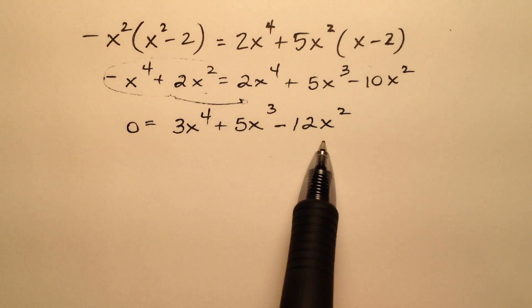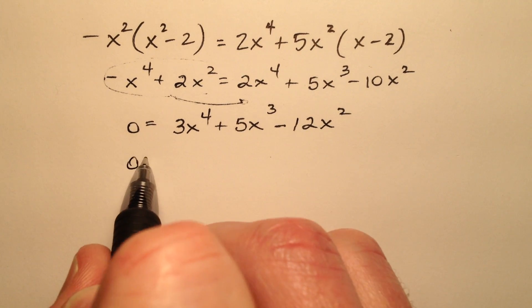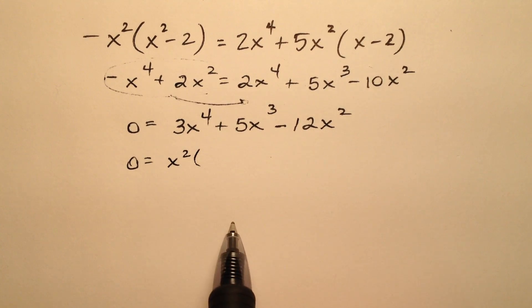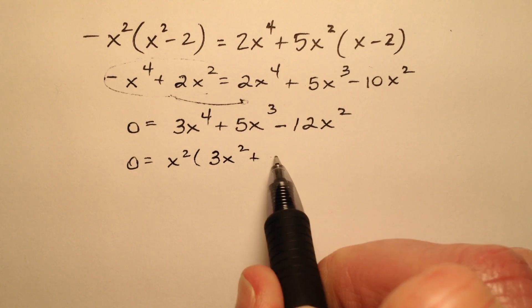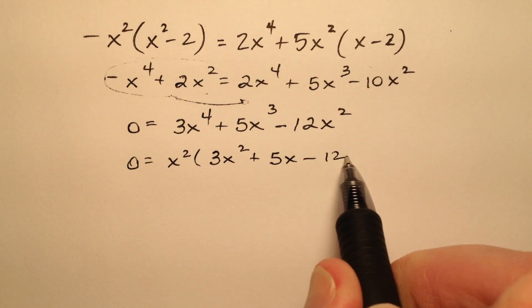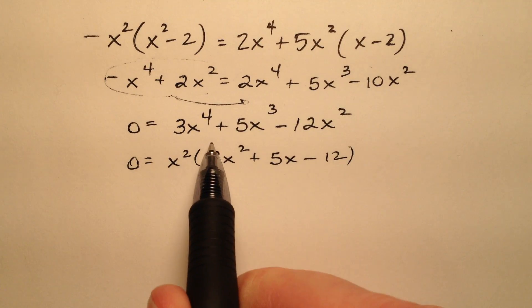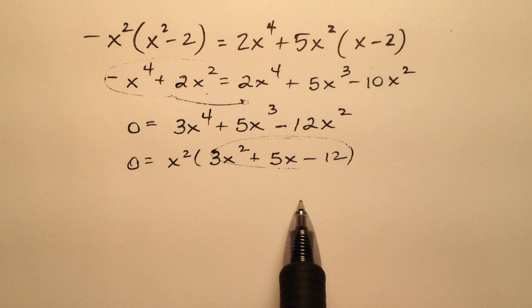The first thing I look for is a greatest common factor, which looks like x squared, and I'm going to be left with 3x squared plus 5x minus 12, which yes, this does leave us with a quadratic.